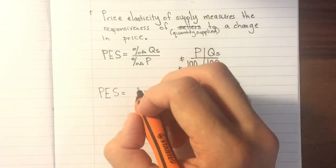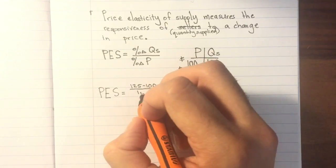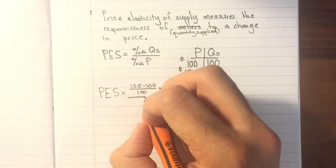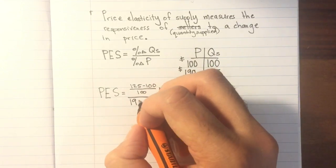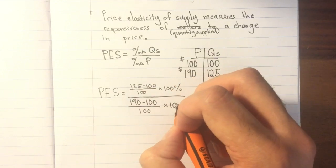First we'll calculate the percent change in quantity supplied, then we'll calculate the percent change in price. The way we do both of those is we take the new value, subtract the old value, divide by the old value, and multiply by 100%. That's how we figure out our percent change.